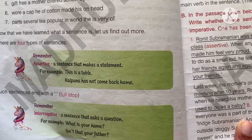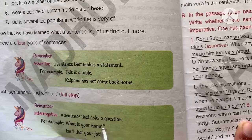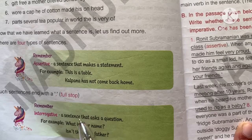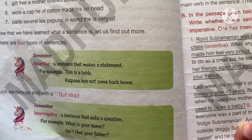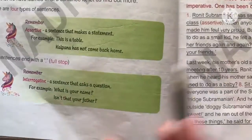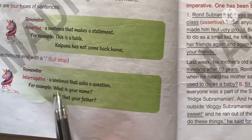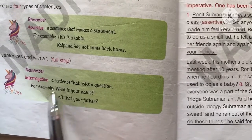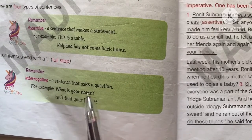Interrogative sentences are sentences that ask a question. When we ask someone a question, those sentences are interrogative. For example, 'What is your name?' and 'Is not that your father?' A question has been asked in these sentences, so they are interrogative sentences.